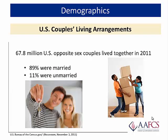While the issue of divorce was in the spotlight during the latter years of the 20th century, unmarried couples living together has been spotlighted in recent years. Of the 67.8 million U.S. opposite-sex couples who lived together in 2011, 89% were married and 11% were unmarried.